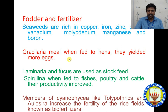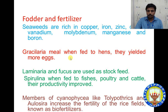Red algae produce agar-agar, a gel-like substance and nutritive agent obtained from Gracilaria and Gelidium species. Algae members are also used as food and fertilizers. Seaweeds are rich in copper, zinc, vanadium, molybdenum, manganese, and boron, making them good bio-fertilizers. Meal when fed to hens helps them yield more eggs. Laminaria and Fucus reserved food materials are also used as stock feed. Spirulina when fed to fish, poultry, and cattle improves their productivity.